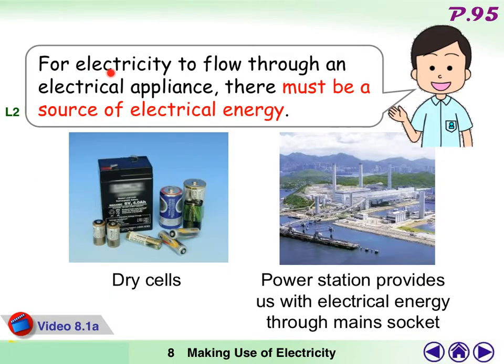For electricity to flow through an electrical appliance, there must be a source of electrical energy. For example, dry cells and power stations provide us with electrical energy through main socket. The main circuits can usually be found in your home.